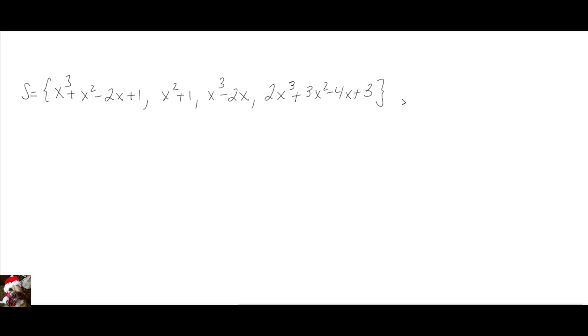So we're going to find the basis for this set. We're going to call it the set W. The first thing we've got to do is treat each polynomial as a vector. So I'm going to call this vector number 1, this is going to be the second vector, this is going to be the third vector, and this is going to be the fourth vector.